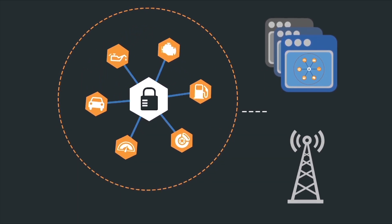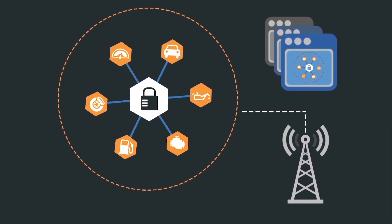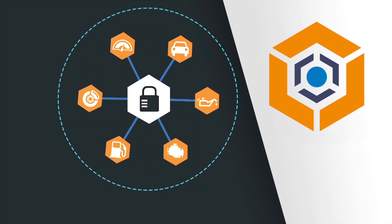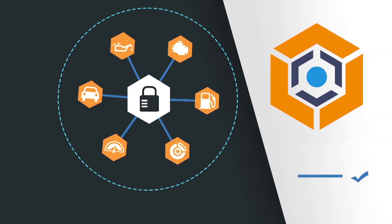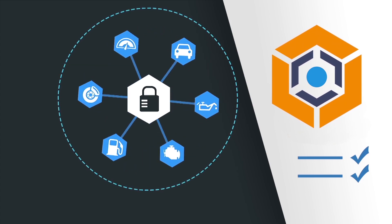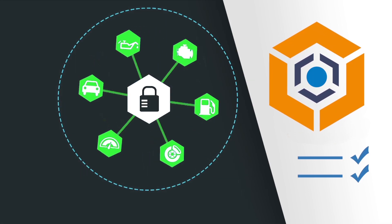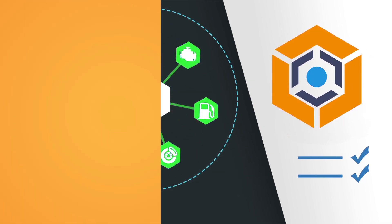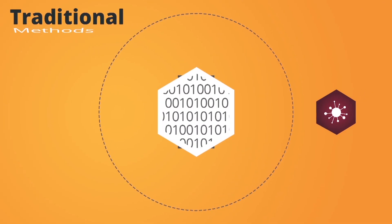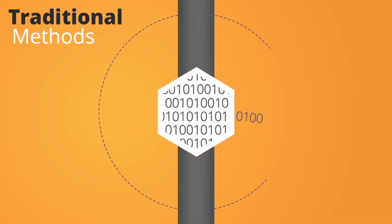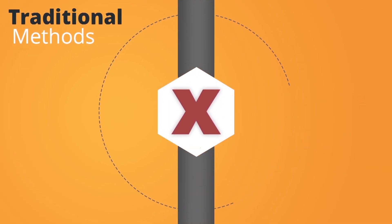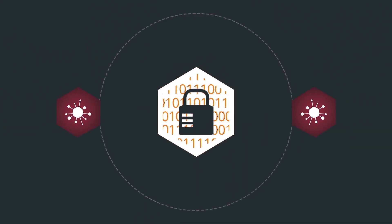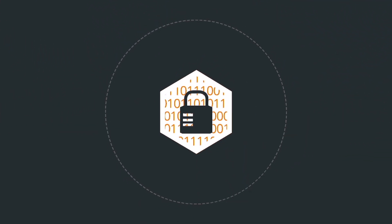Before being transmitted down the off-ramp onto the untrusted network, Device Authority will process the data payload and, through predefined policies, apply key-based encryption to the data fields themselves. In comparison to traditional methods of data transfer where data can be exposed and vulnerable to attack, Device Authority's solution ensures that the data remains secure at all times.